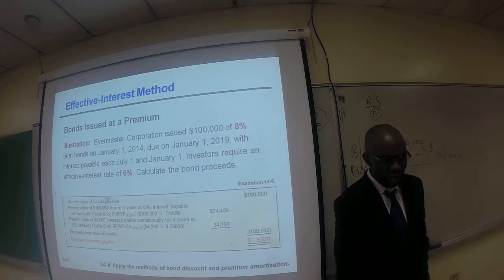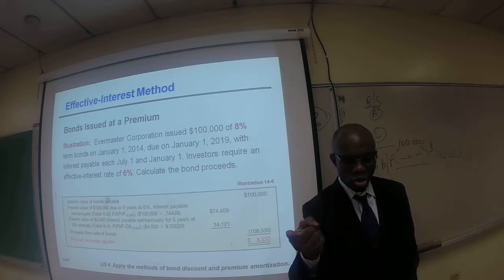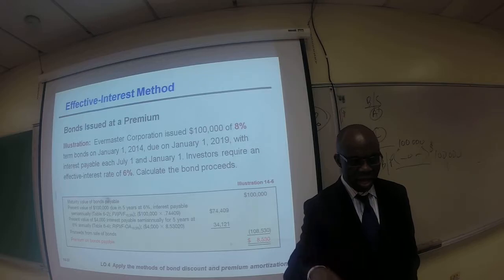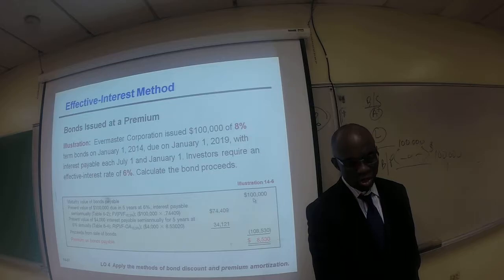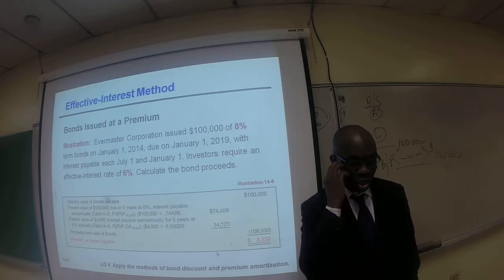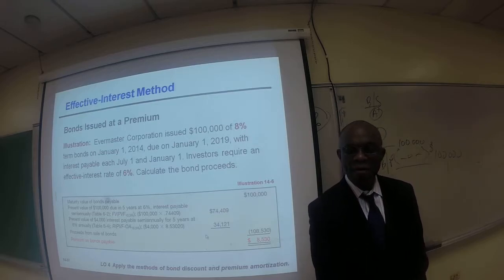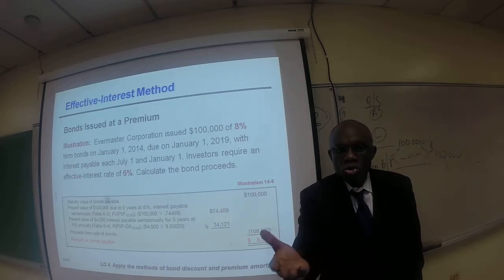Here, again, like we demonstrated, we calculate the present value of the single sum and the present value of the interest payment added up, and the sale of the bond is $108,530, but the face value is $100,000. So obviously we sold the bond $8,500 more than the face value or par value. So the bond was issued or sold at a premium.